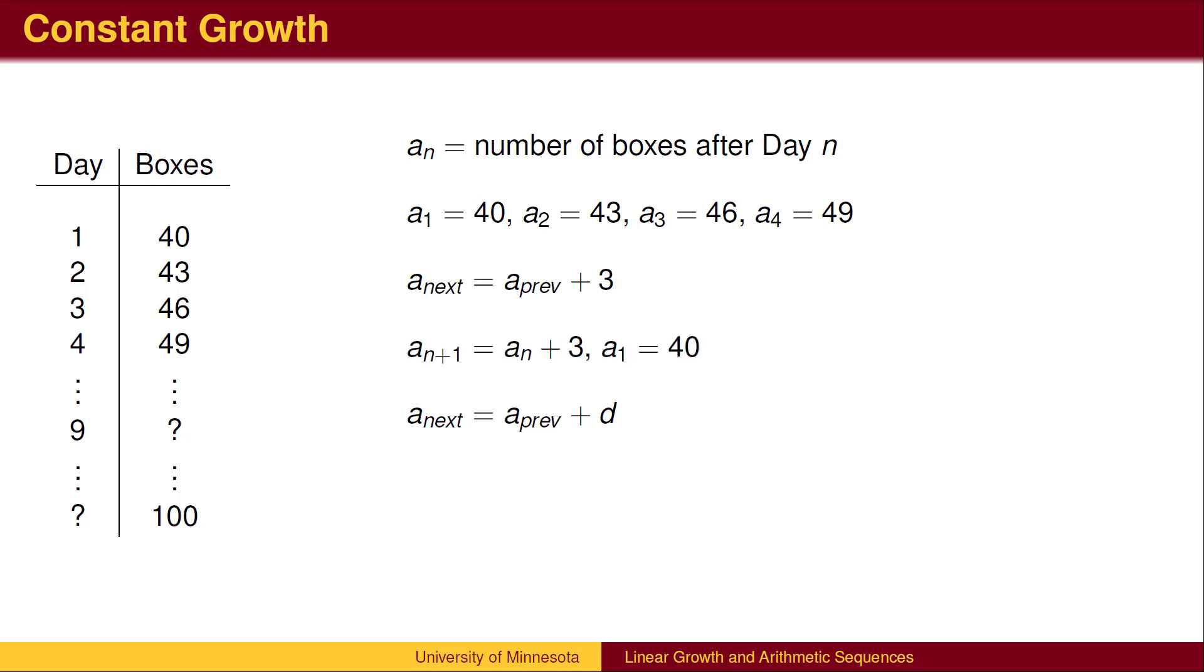Once we know that a_1 equals 40, we can find a_2 by adding 3. We continue adding 3 each step to find more terms. It doesn't matter where you start, you can find all remaining terms from the recursion.